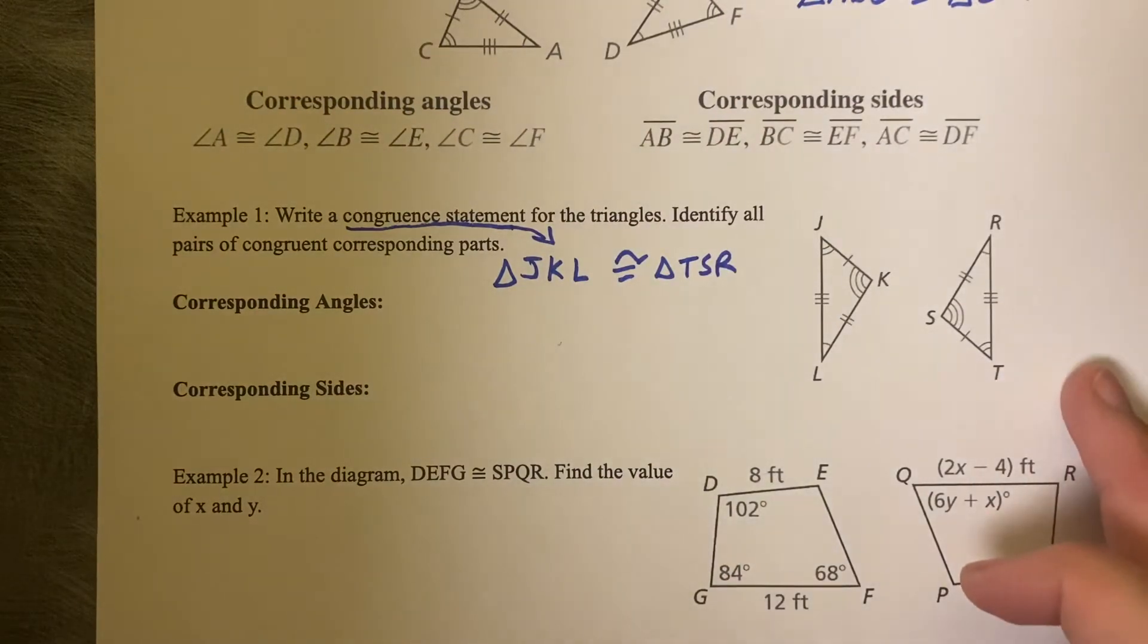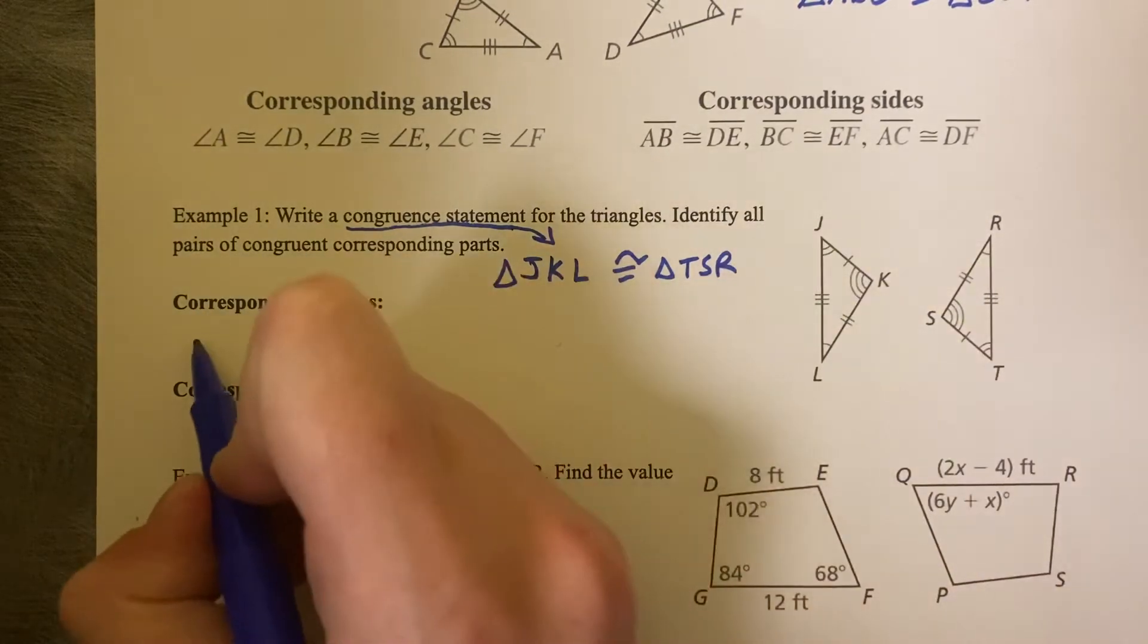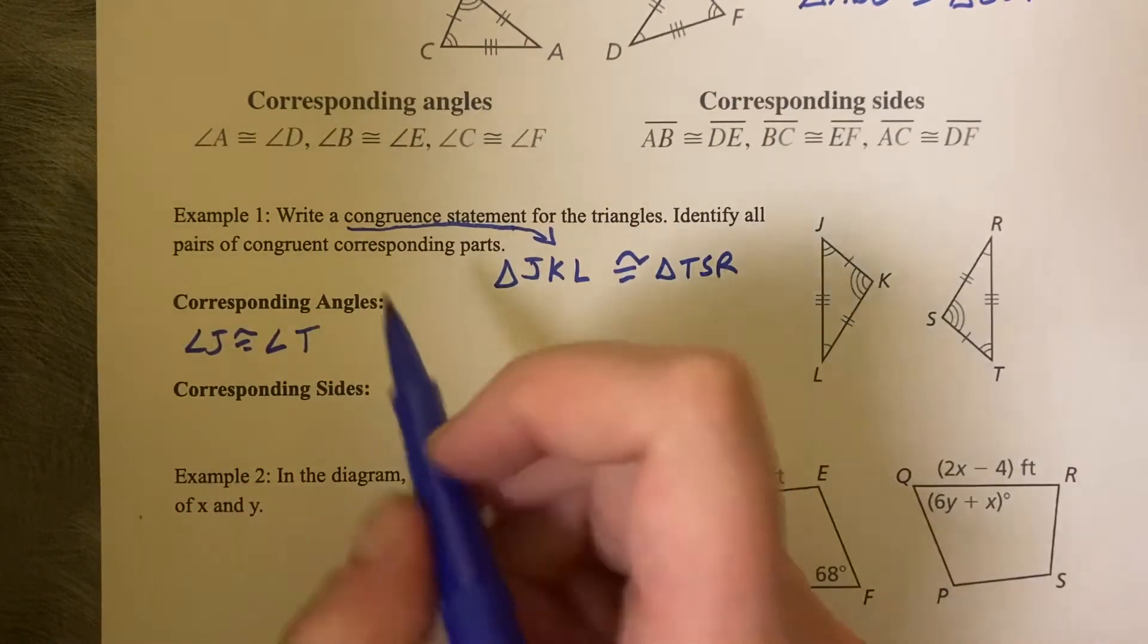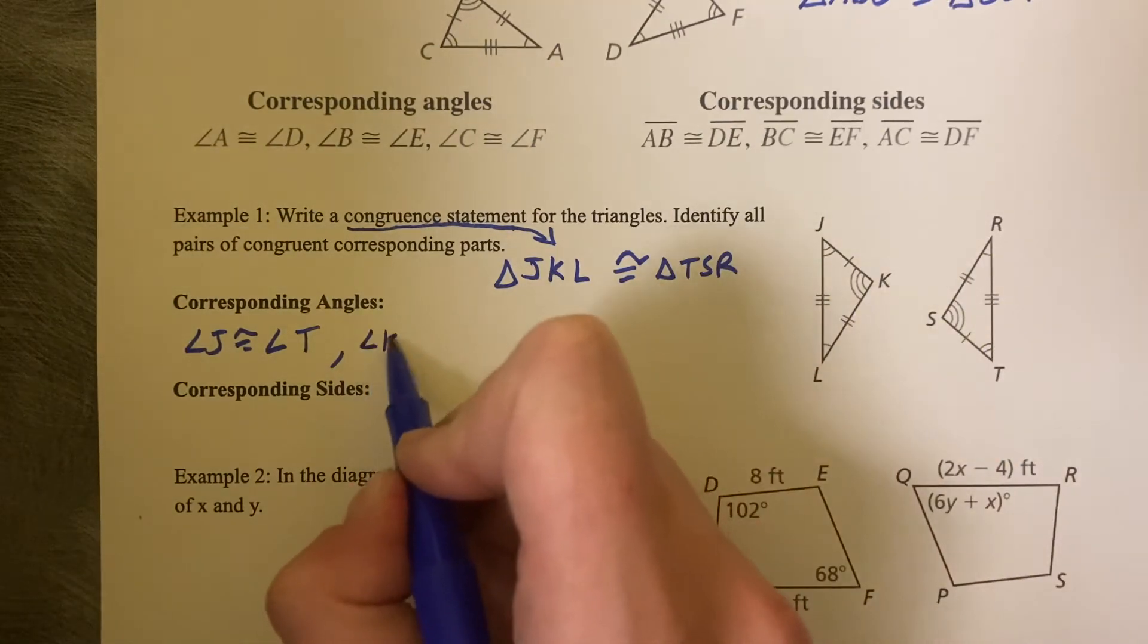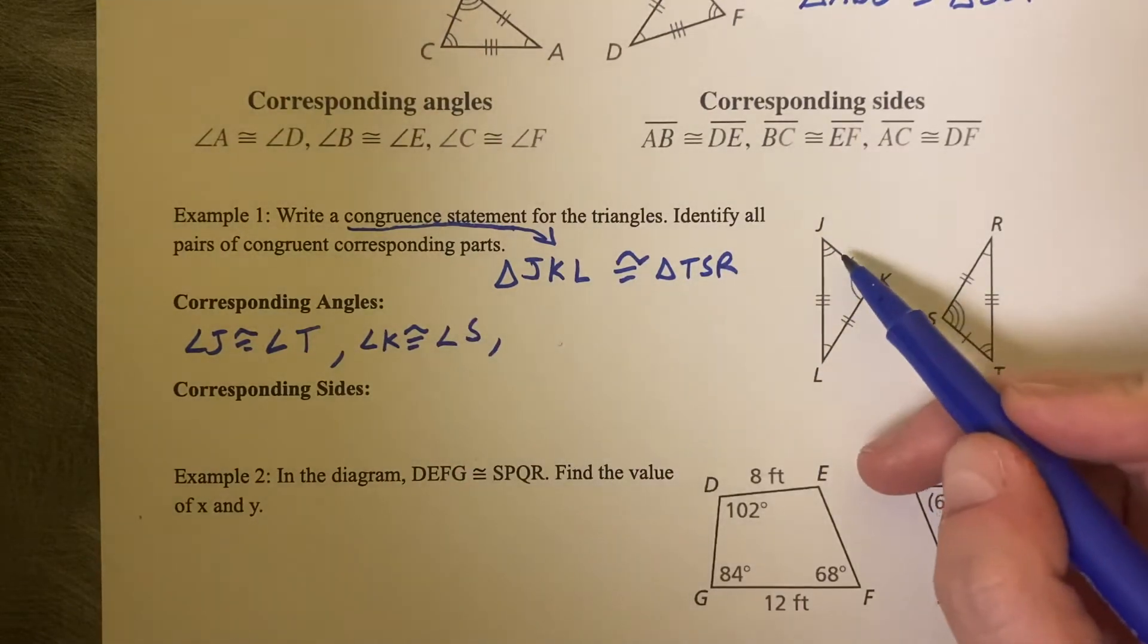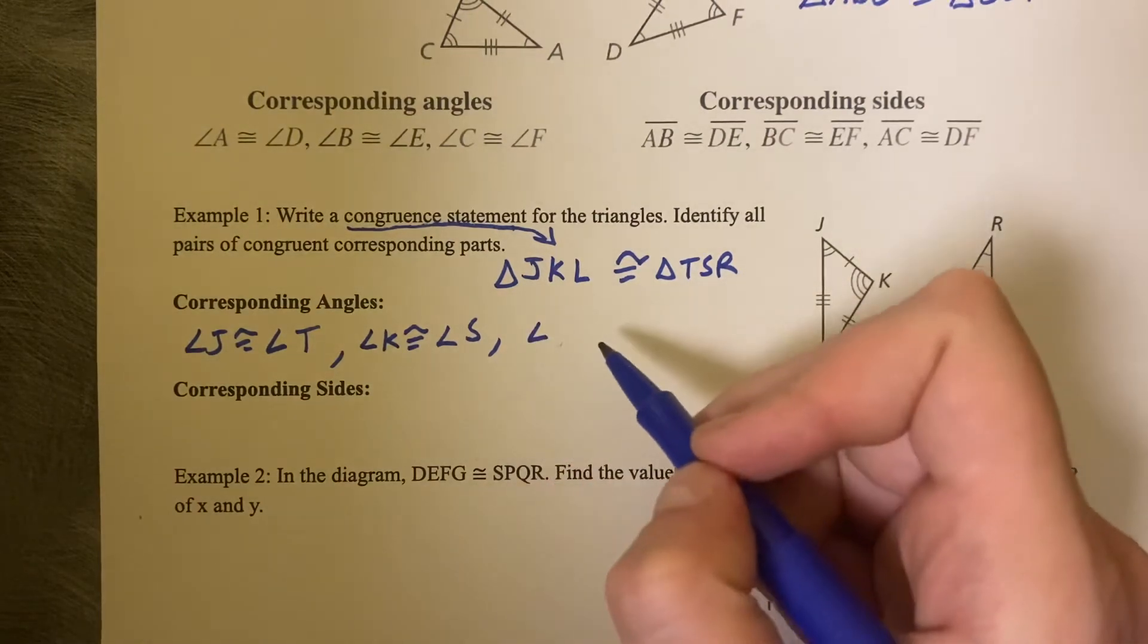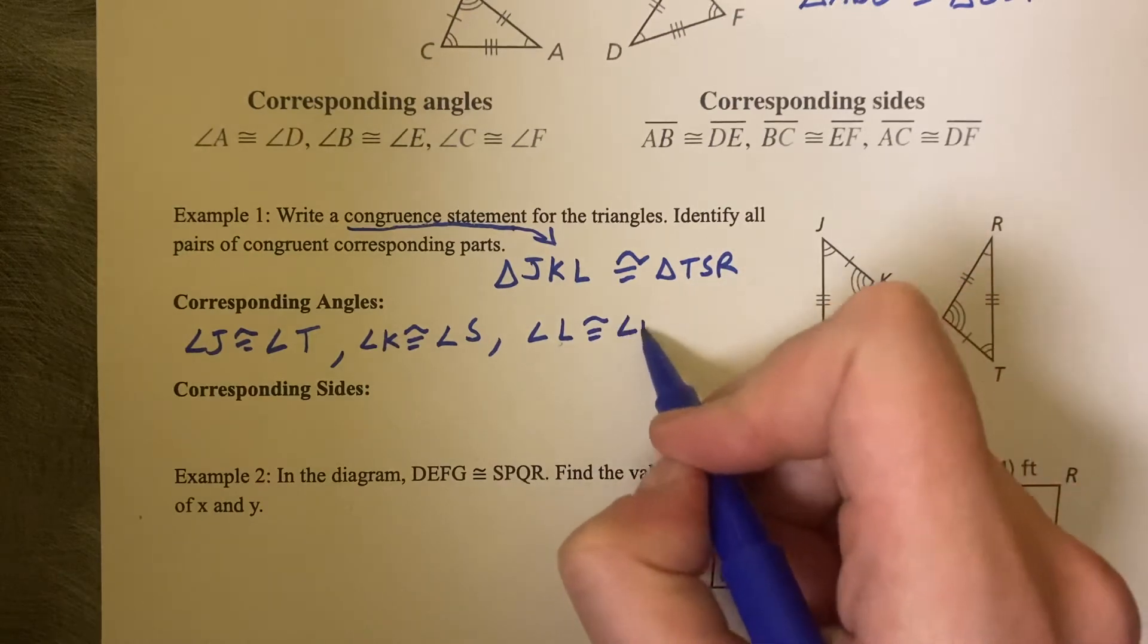Now we just want to list the corresponding angles and the corresponding sides. So I know that two tick marks matches with two tick marks, so angle J is congruent to angle T. K has three, S has three, so angle K is congruent to angle S. Then one tick mark matches with one tick mark, so angle L is congruent to angle R.